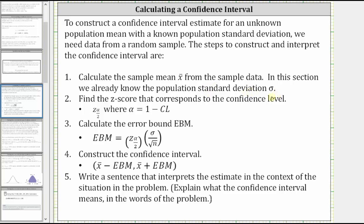Step one, we calculate the sample mean x-bar from the sample data. Step two, we find the z-score that corresponds to the confidence level, which is indicated by z sub alpha divided by two, where alpha is equal to one minus the confidence level. Step three, we calculate the error bound, which is equal to the z-score from step two times the population standard deviation divided by the square root of the sample size, given by sigma divided by square root n.